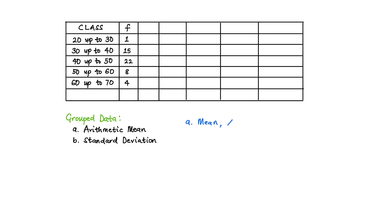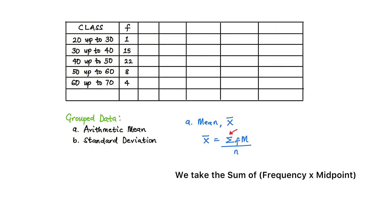The mean is usually represented with x-bar. So, the mean x-bar equals the summation of the frequency multiplied by the midpoint, divided by the number of observations. This means we take the sum, which is sigma, of the frequency times midpoint — the sum of all the products of the frequency and midpoint.